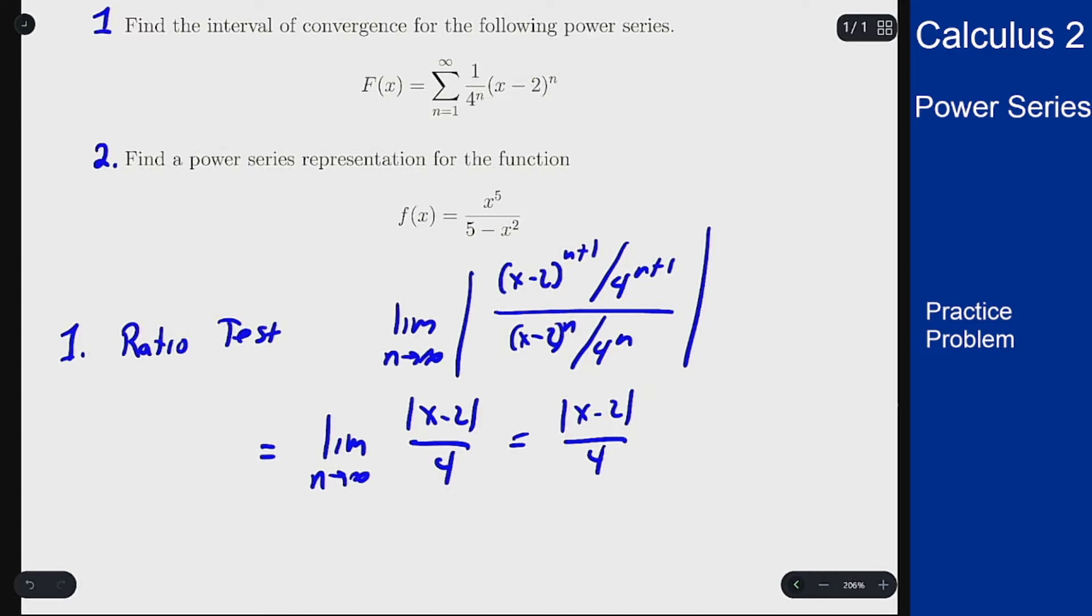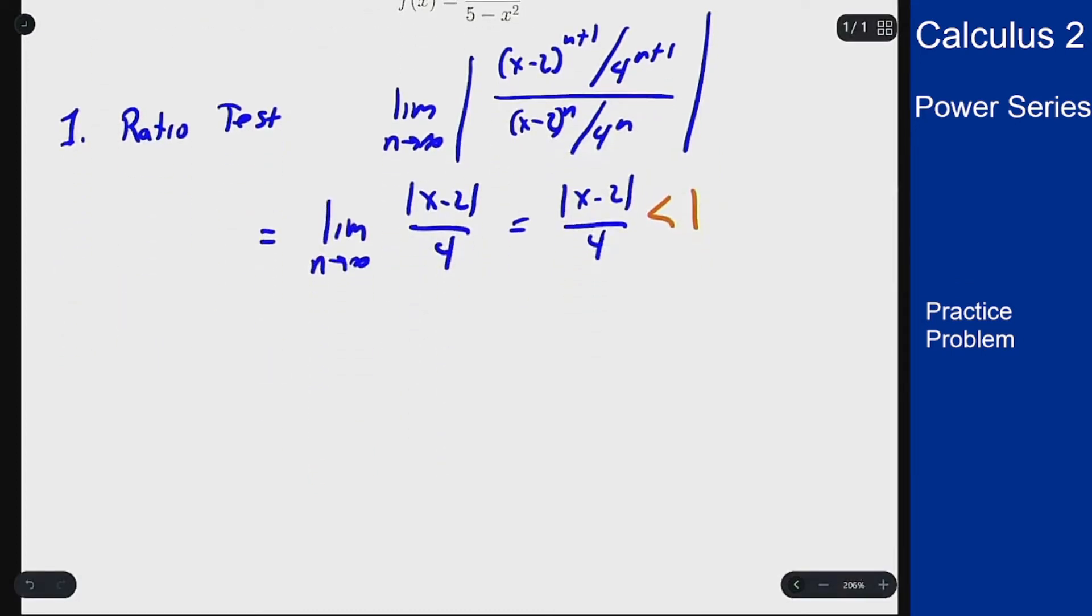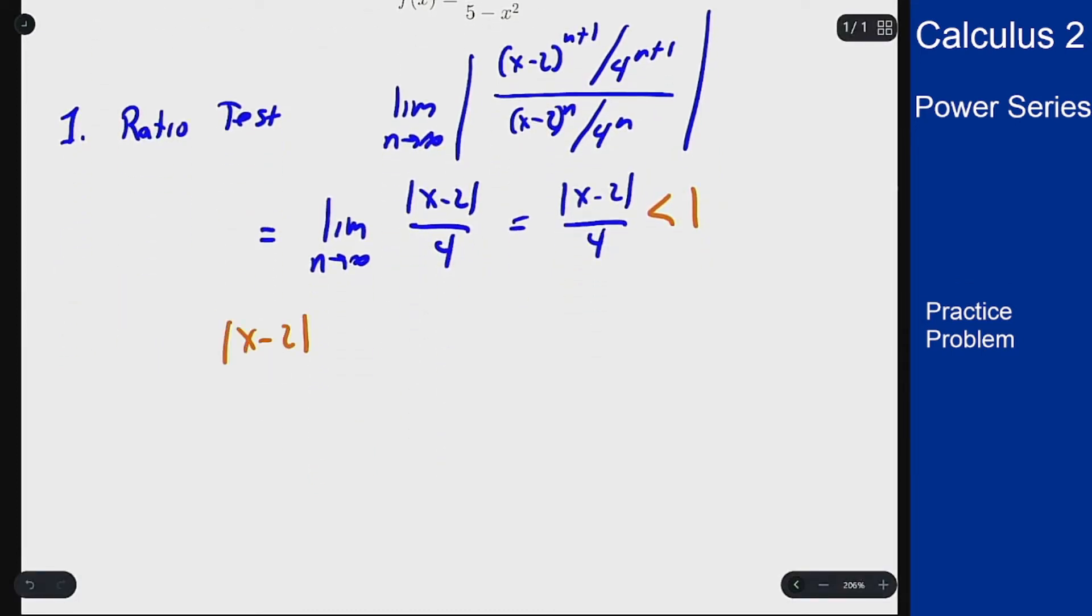Now if I want this series to converge, I need this to be less than 1. I can rewrite this inequality in interval notation. This tells us |x-2| < 4, or -4 < x-2 < 4. Adding 2 to everything: -2 < x < 6. So as a base interval, I have -2 to 6 for the interval of convergence.